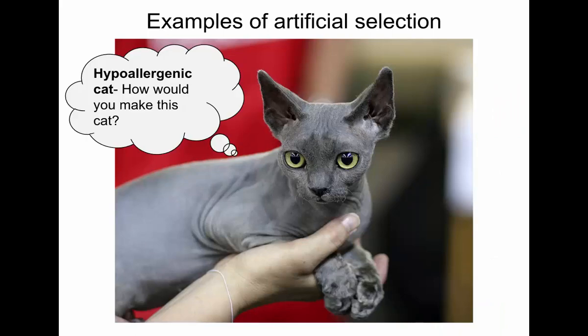Artificial selection — like the hypoallergenic cat. How do people create dog breeds or cat breeds? They're all one species — dogs came from wolves — but humans bred these cats to be different. How do they do that? You take a cat that has the least amount of hair from one litter, take another with the least amount of hair from another litter, and you put them together to mate.